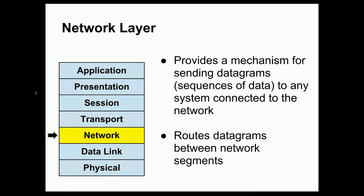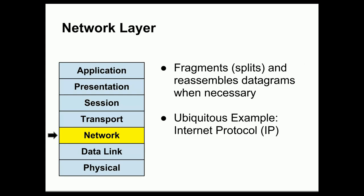Above the data link layer is the network layer, which is an abstraction mechanism that provides a means for sending datagrams or sequences of data to any system connected to the network. These systems do not need to be on the same network segment. If there are multiple segments, it is the network layer's responsibility to route datagrams between those segments. It is also sometimes necessary to split and reassemble datagrams, and the network layer performs this fragmentation. A ubiquitous example of the network layer is the Internet Protocol, or IP.